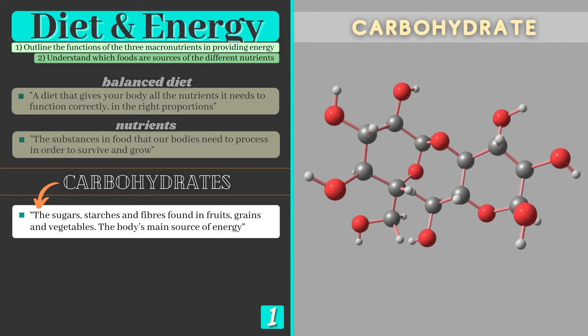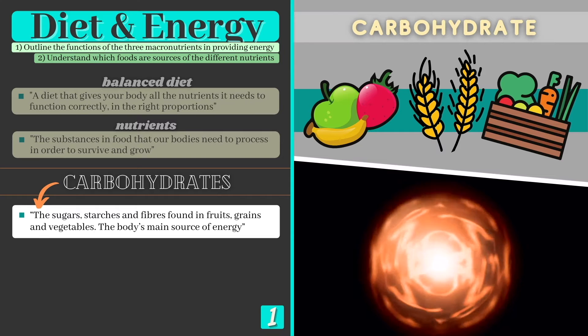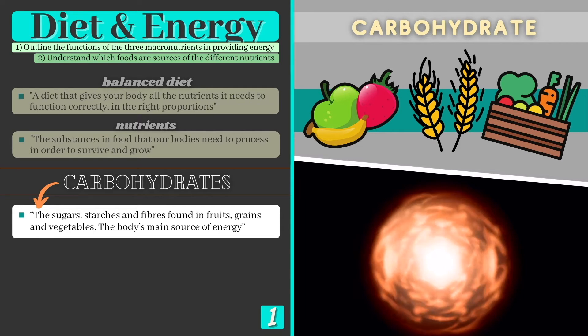Carbohydrates are the sugars, starches and fibers found in fruits, grains and vegetables. They typically make up a big portion of the diet and their main role is to provide the body with energy.